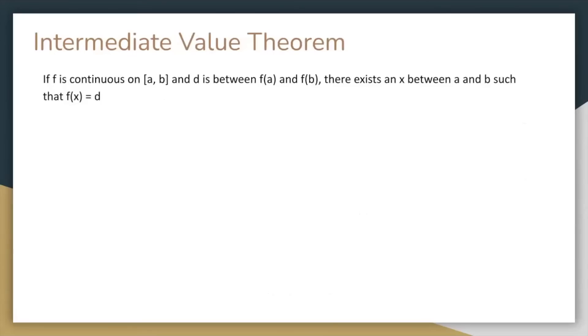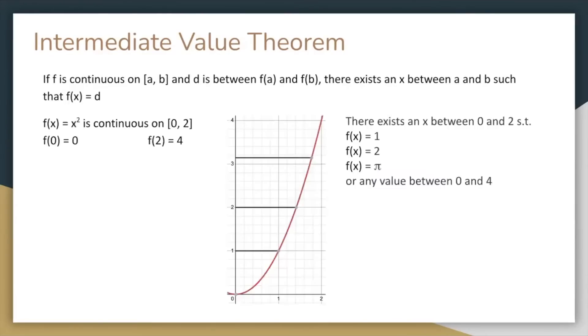And finally, the intermediate value theorem, which states that if f is continuous on the closed interval a comma b and d is between f of a and f of b, there exists an x between a and b such that f of x equals d. So here's an example. If we consider f of x equals x squared on the interval 0 to 2, f of 0 equals 0 and f of 2 equals 4. So if you pick any value d between 0 and 4, there exists an x value between 0 and 2 such that f of x equals d.